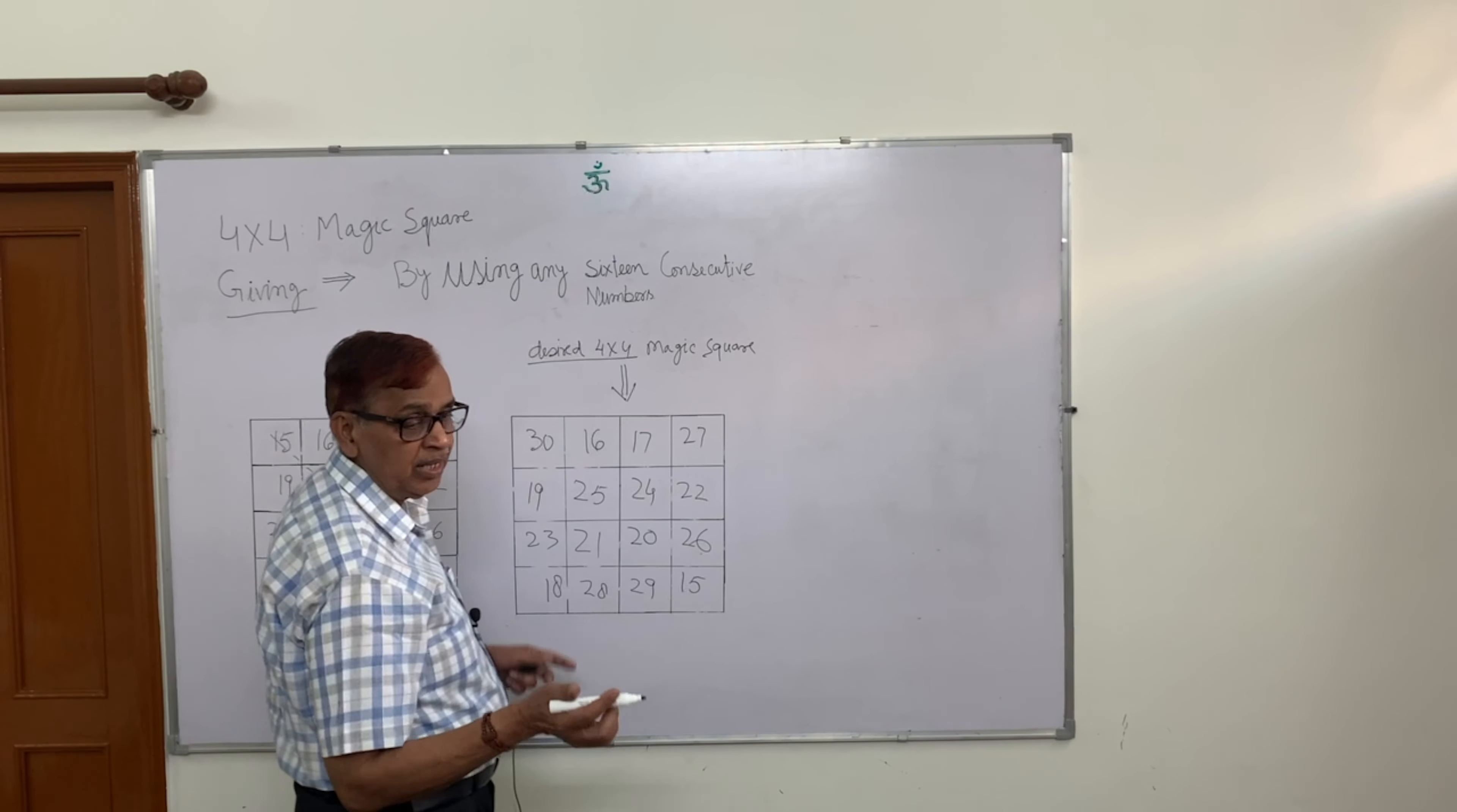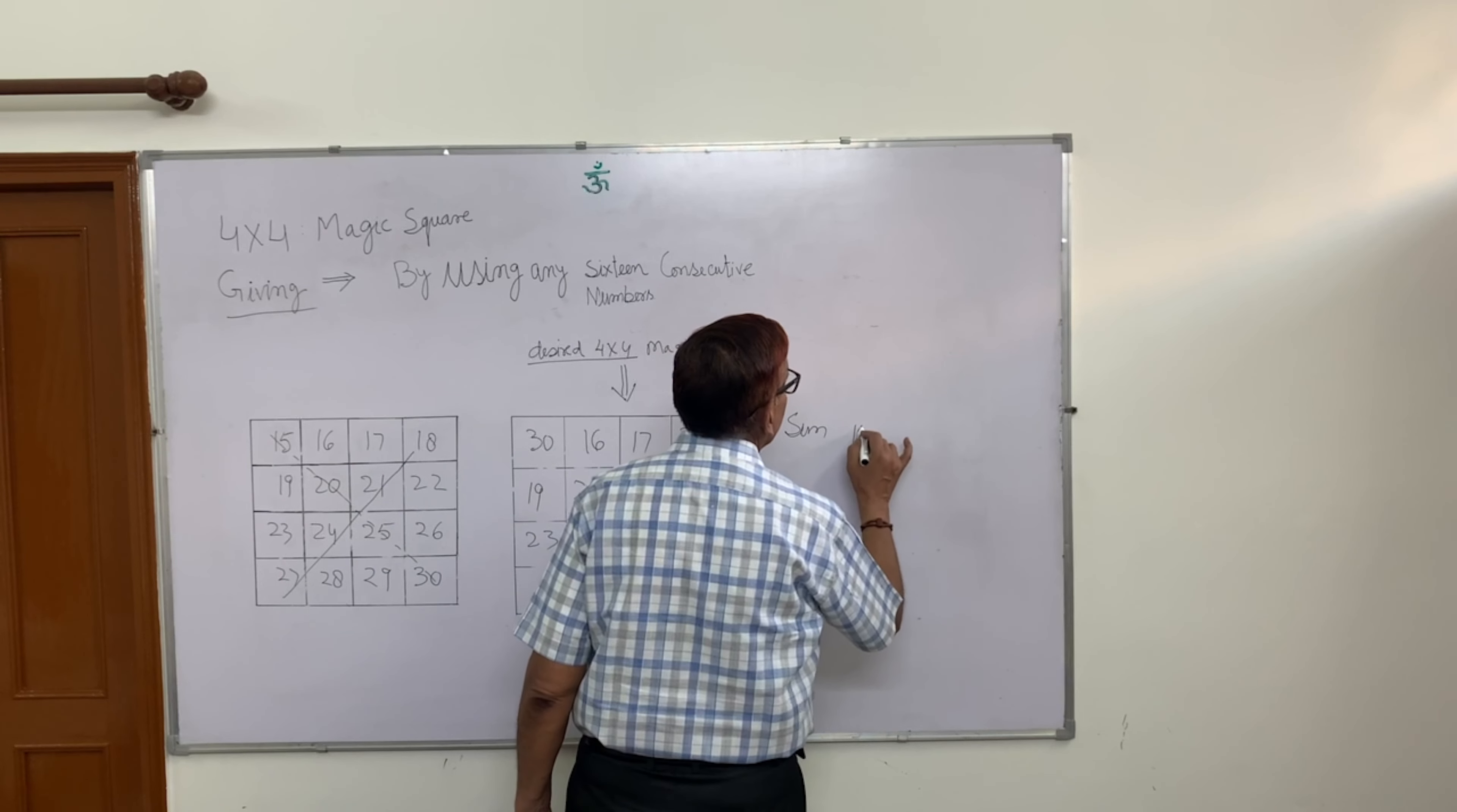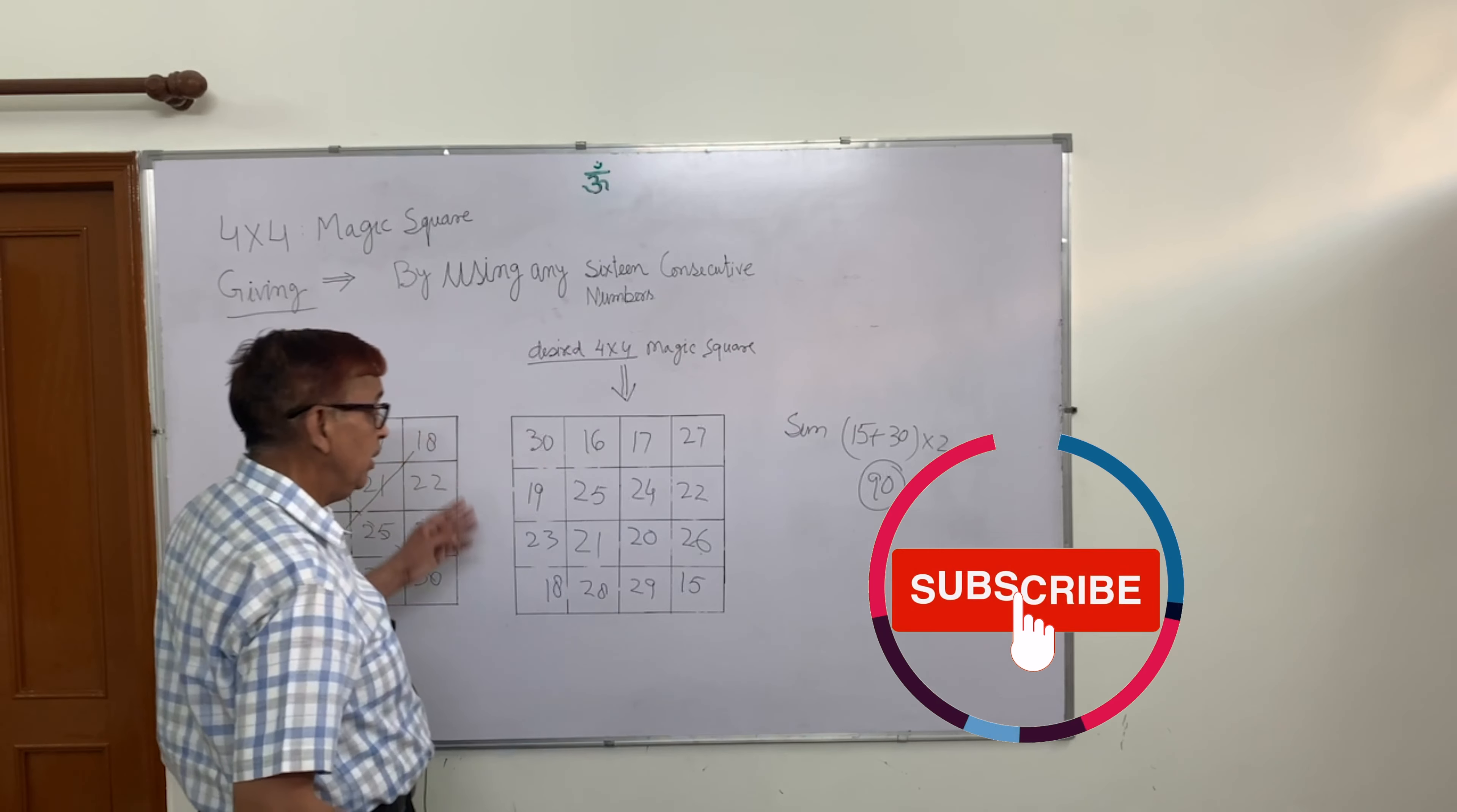Check the sum. Now you say the sum will come. The sum will come to the first element. Check the sum from here. Here is 15 plus 30, multiply by 2. What is that? 45 or 90? Now total it.